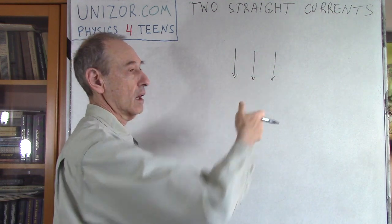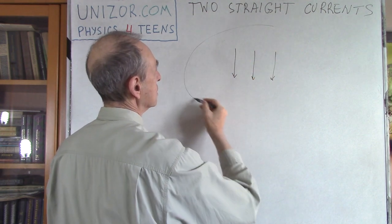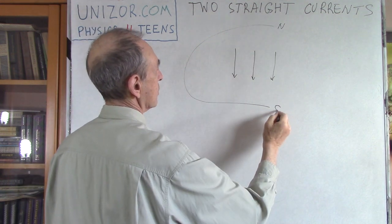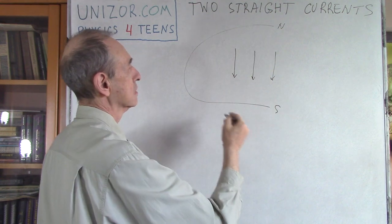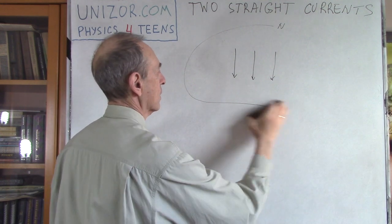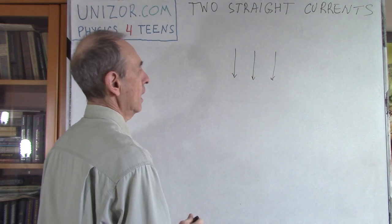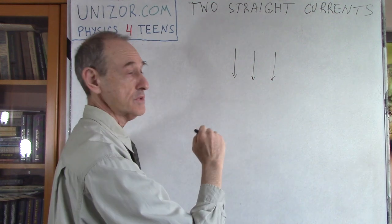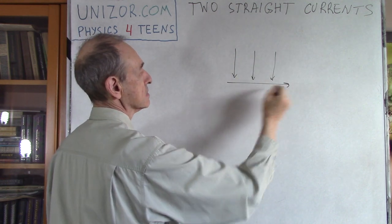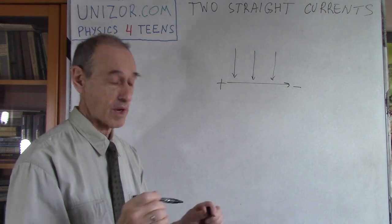Consider you have a very big horseshoe magnet — north on one side, south on the other — so in between the north and south you have a relatively uniform field. Now, if you have this uniform field and perpendicularly to it a straight-line current, this is the magnetic field and this is the straight-line current going from plus to minus. That's the definition of the direction of the electric current, not related to electrons.